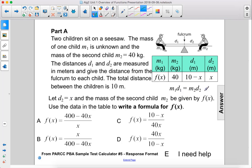M1 D1 equals M2 D2. Let D2 equal X, and the mass of the second child, M2, be given by F of X.